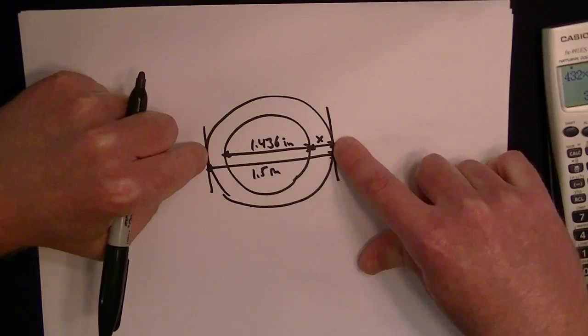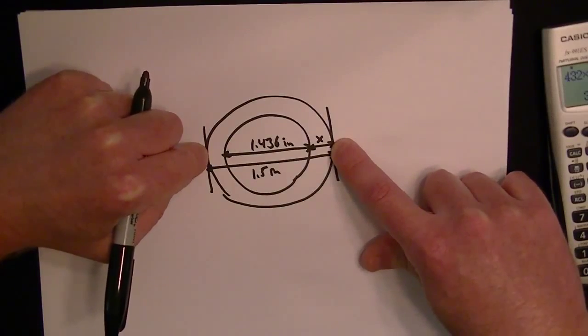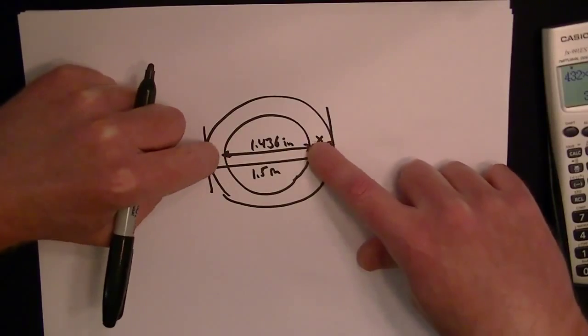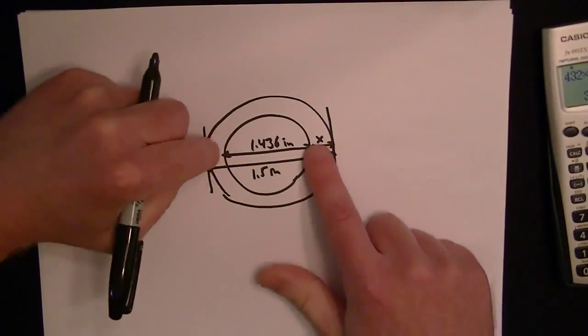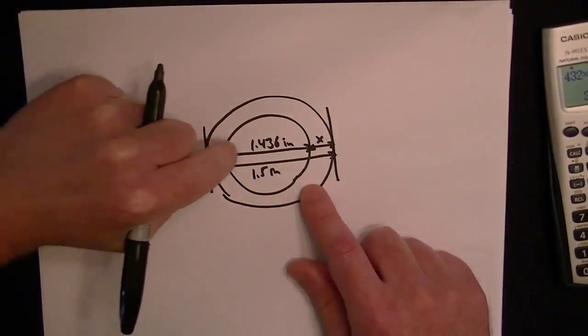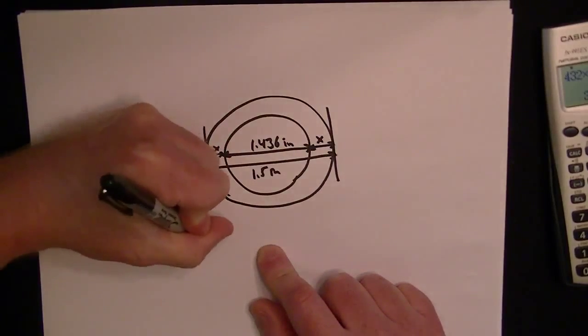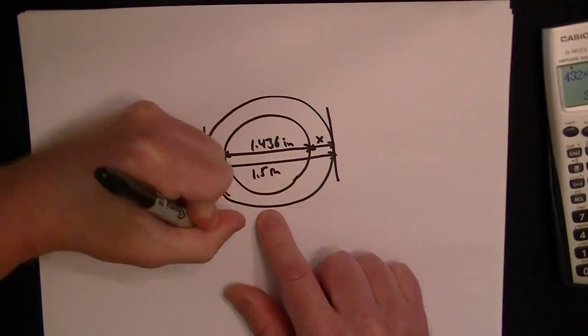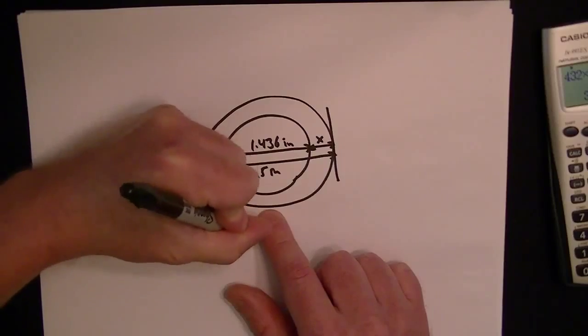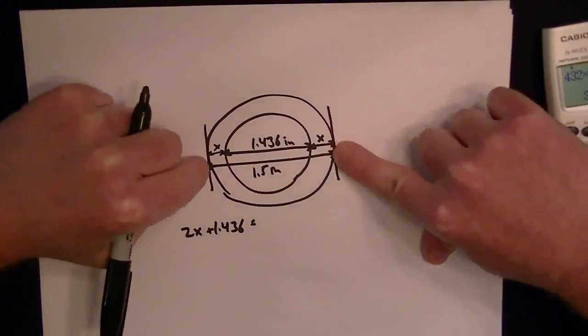So the thing you can realize is 1.5 minus the inside is going to give you 2X. Because you've basically got an X plus the inside plus another X. So we can write that as 2X plus 1.436 is going to be the total distance here.